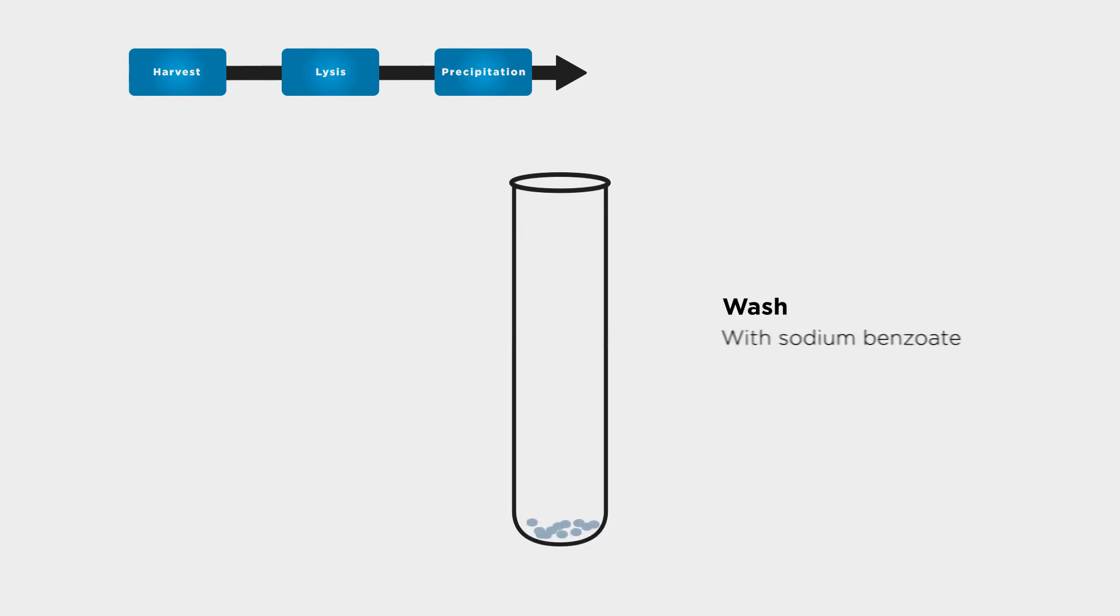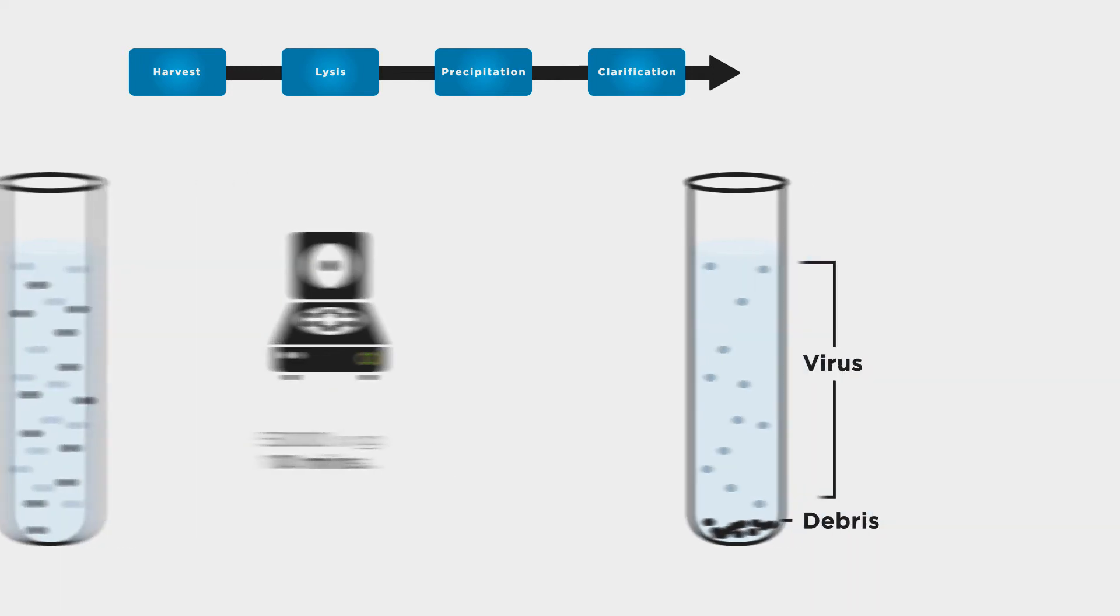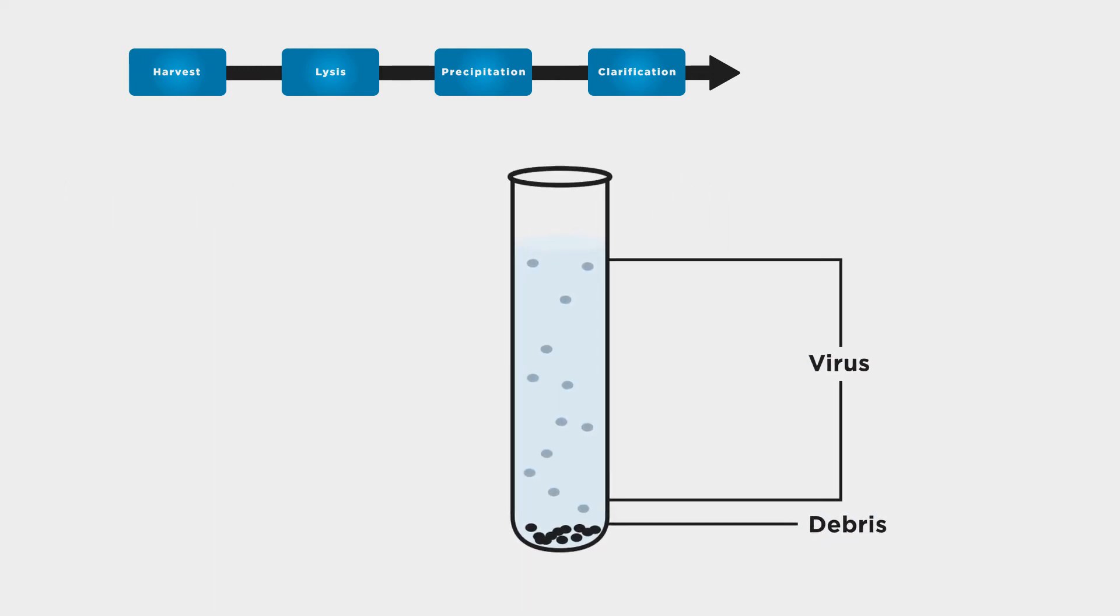Wash the pellet with sodium benzoate. The pellet is re-suspended and centrifuged again to further clarify the viral mixture from cellular debris and other chemicals from the previous steps. The viral mixture is now contained in the supernatant.